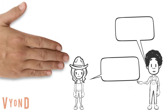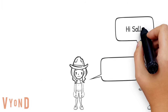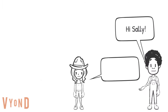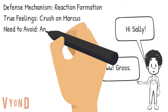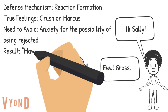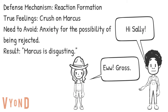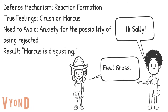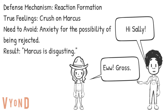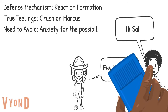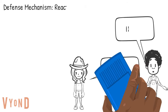If Sally were to use the defense mechanism reaction formation, she would say the exact opposite of how she feels or what her id impulses are to avoid the anxiety of possibly getting rejected. So in this case, Sally would act like she does not like Marcus or thinks that he is gross to avoid the anxiety of being rejected by him.